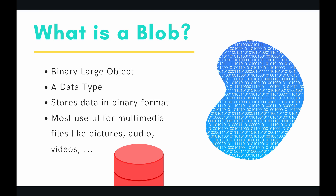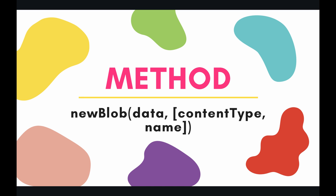So that is what a blob is. Let's jump over to our next slide to see what methods we have to create a blob. Really, there's only one method, and it's very straightforward. It's called newBlob, and you just pass it some data. If you have additional data such as the content type or the name of that data, you can pass that in as well. Let's jump into the code and see an example of creating blobs using the utilities service.